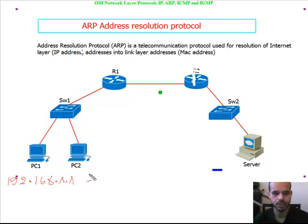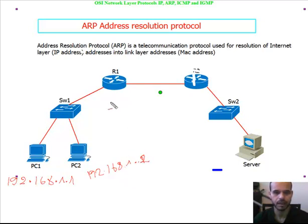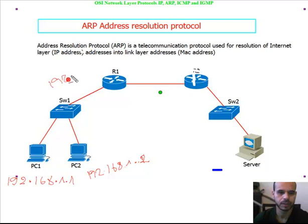PC2 will have 192.168.1.2, and the router interface, which is the default gateway, will have 192.168.1.1.